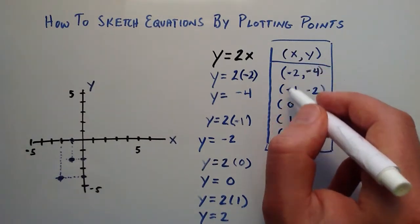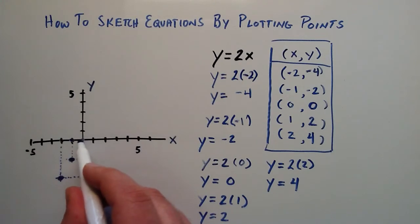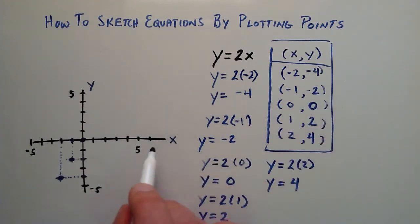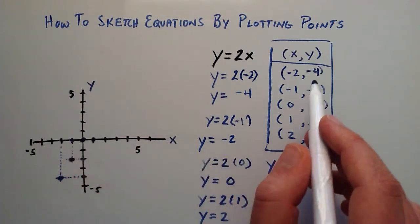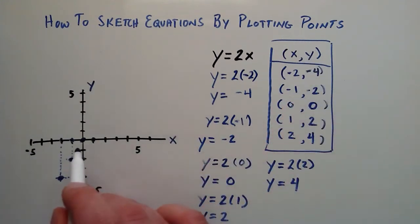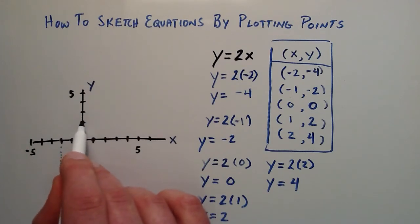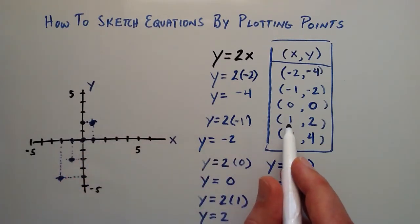For the third point, x is 0 and y is 0, so x and y are both 0 at the origin — we put a point there. Then for the point 1, 2: on the x-axis we go over 1 unit, and on the y-axis we go up 2 units. Looking at the projections of those two components, they cross at the point 1, 2.